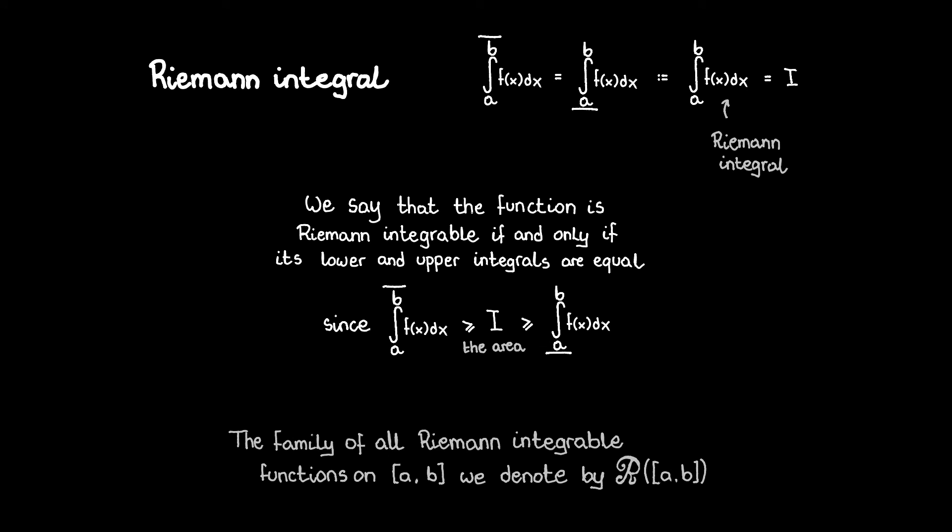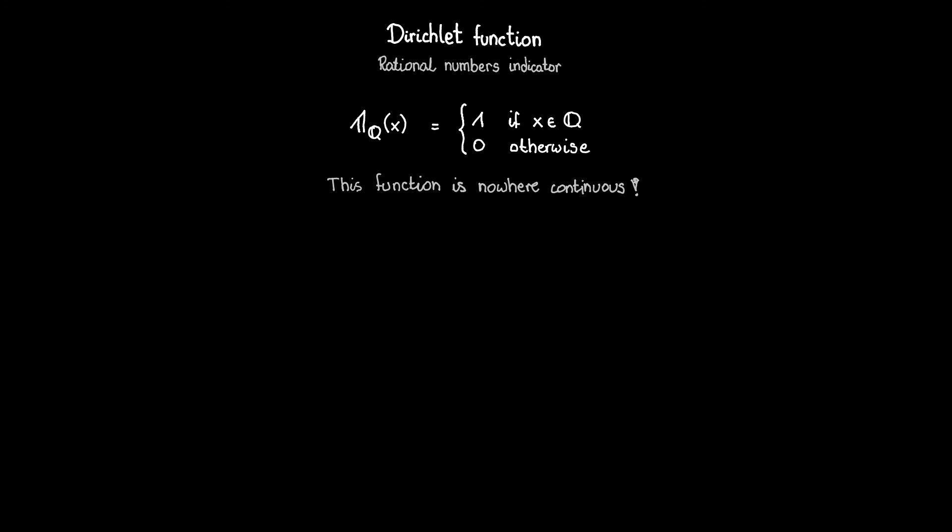Be careful! Some functions are not Riemann integrable. Let's take the Dirichlet function over the interval. This function assigns 1 to every rational number and 0 to every irrational number. It is nowhere continuous.